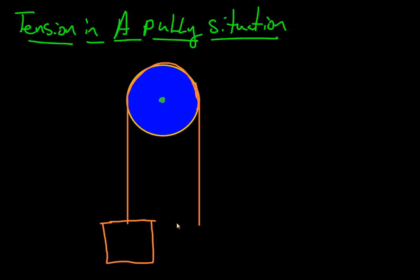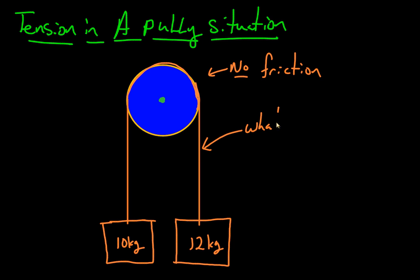We'll actually give it a value. Let's say this is 10 kgs and this is 12 kgs. Let's say there is no friction here. The question is, what tension is there here? I guess one other thing we can ask is find the acceleration of this system as well.